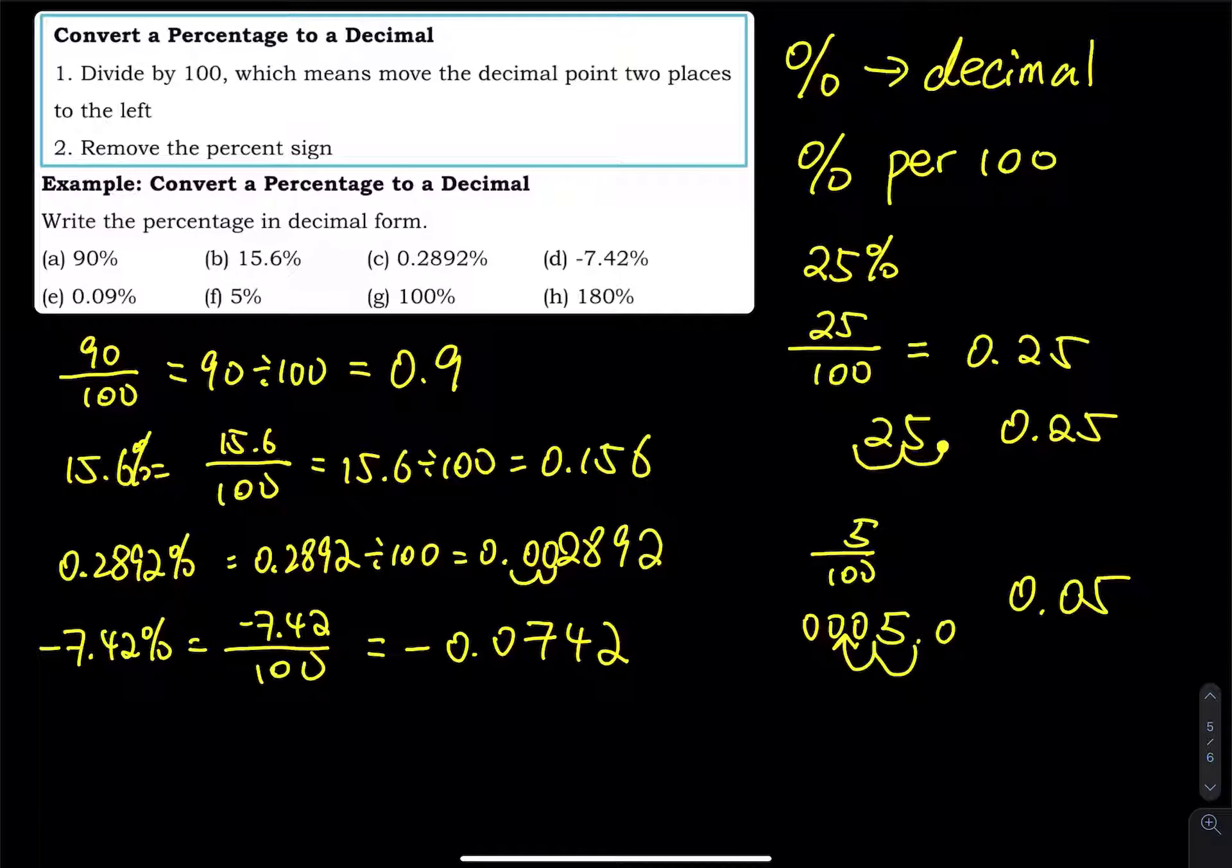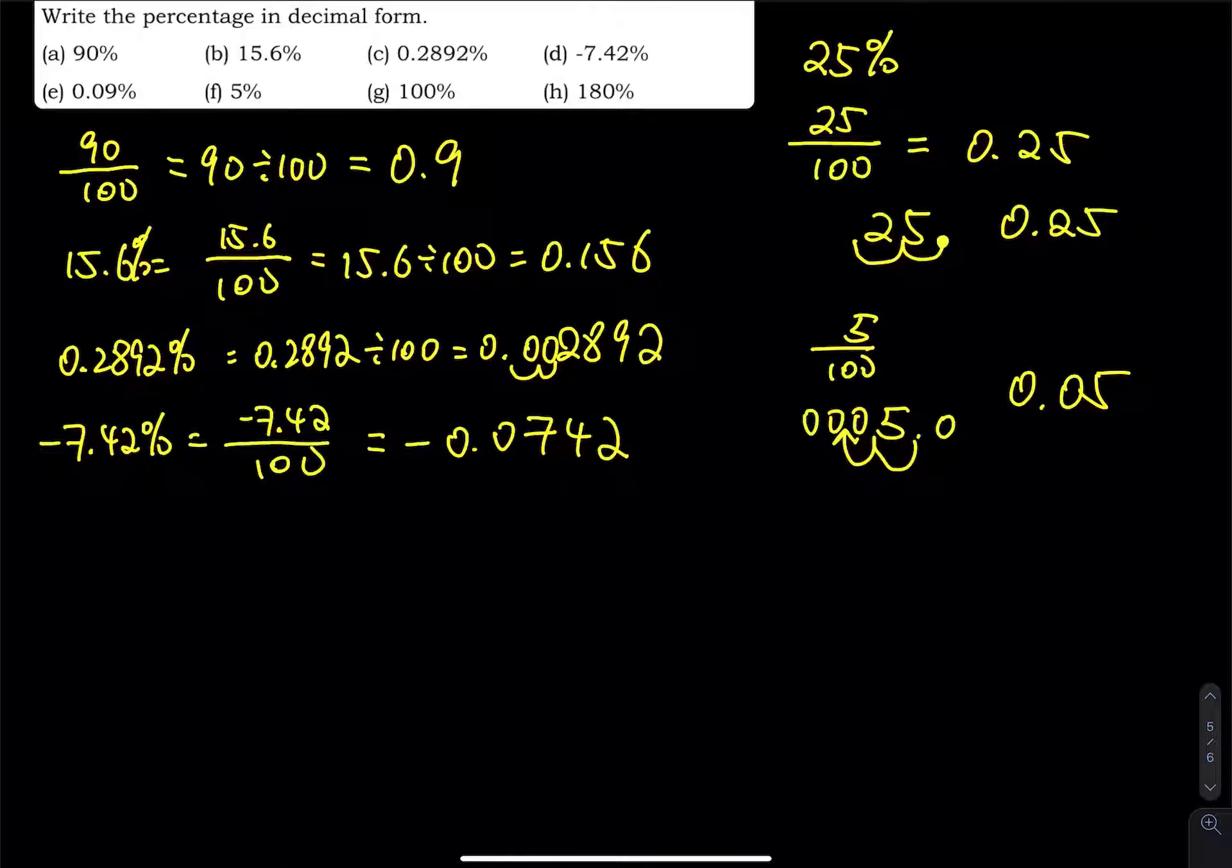And then we have E. E is 0.09%. So you take 0.09 divided by 100. Then that equals 0.0009, right? So the decimal point was right here. And then you move one step, two step. Then you get that answer.